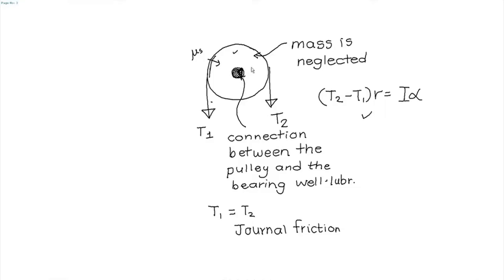If friction is present at the bearing, the problem becomes significantly more difficult — involving journal friction, which we will not discuss here. But if everything is frictionless yet the pulley has mass, then (T₂ − T₁)·r equals the moment of inertia of the pulley about the axis of rotation times angular acceleration. I'll try to incorporate a problem of this type in tomorrow's tutorial. If mass is neglected, the I·α term becomes zero, and T₁ equals T₂.